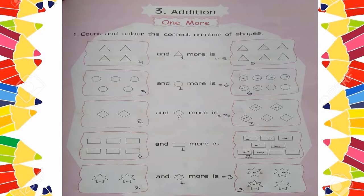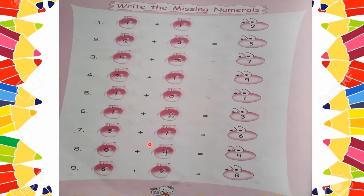Today the next page we will solve is page number 22. The question is: write the missing numerals. Numerals means numbers or digits. Some numbers are missing and you have to identify and complete the missing spaces.